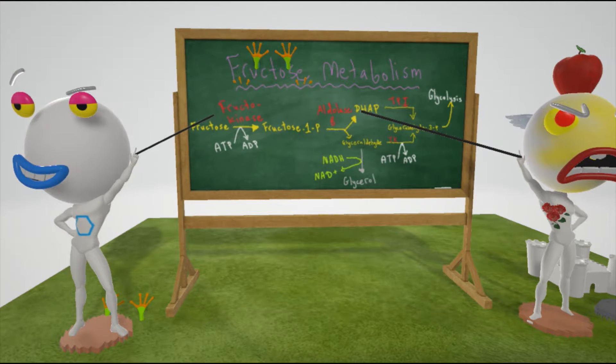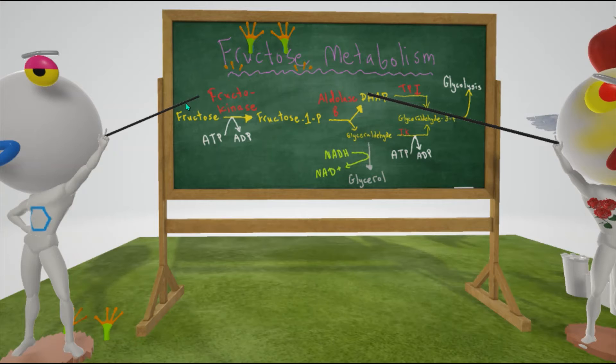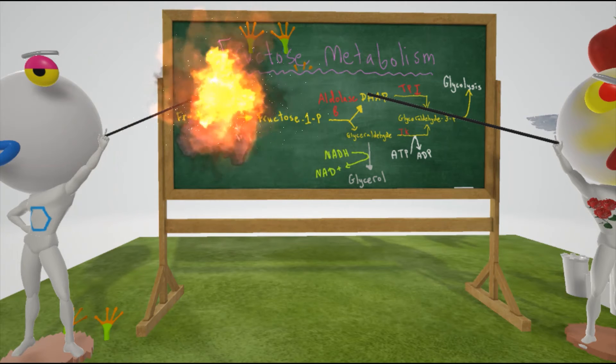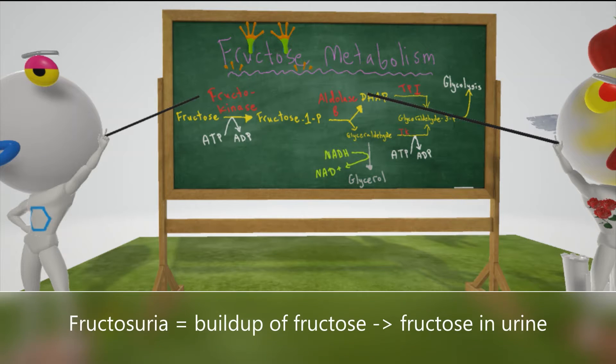For essential fructosuria, it's important to remember this beginning equation. Normally in fructose metabolism, fructose is converted to fructose 1-phosphate. In essential fructosuria, fructokinase is defective, and that's why here it's exploding. So when fructokinase is defective, there's going to be a buildup of fructose, and that's exactly what essential fructosuria is.